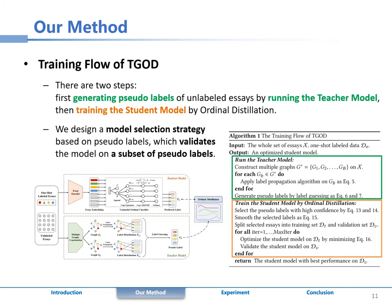In summary, there are two steps in TGOD to train the student model under the one-shot setting. First, generating pseudo-labels of unlabeled essays by running the teacher model, and then training the student model by ordinal distillation.